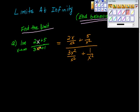Which will give us, that will yield out to us, x over x squared is 2 over x. So, 2 over x plus 5 over x squared over 3 plus 1 over x squared.